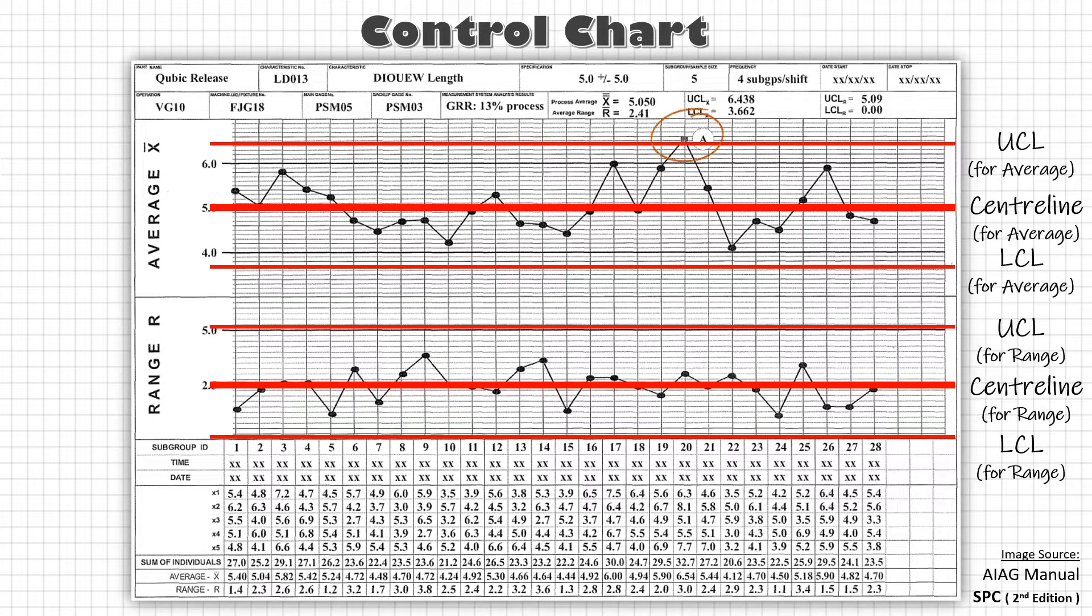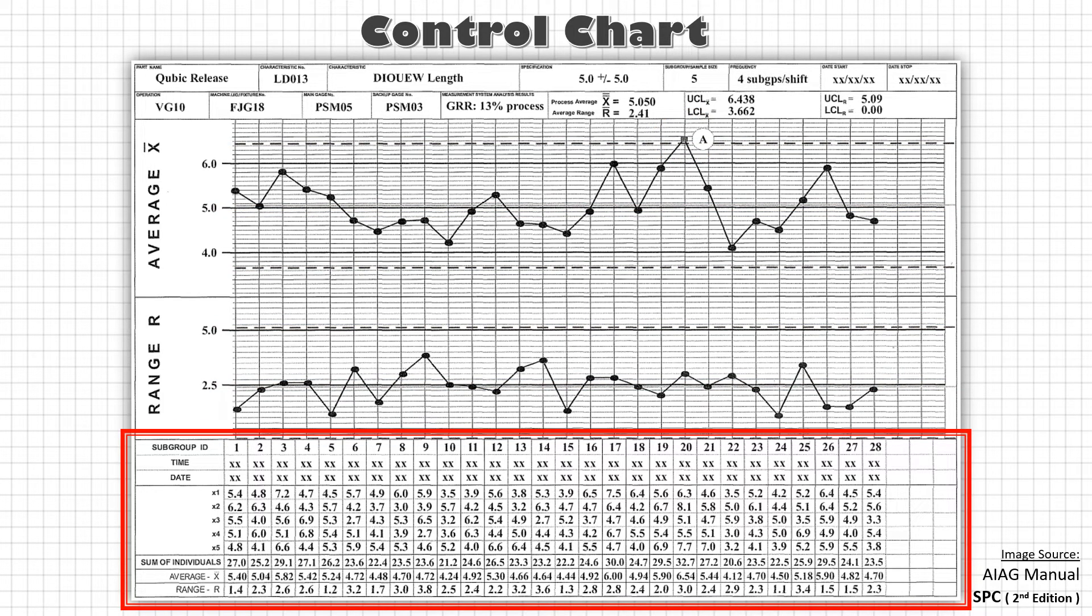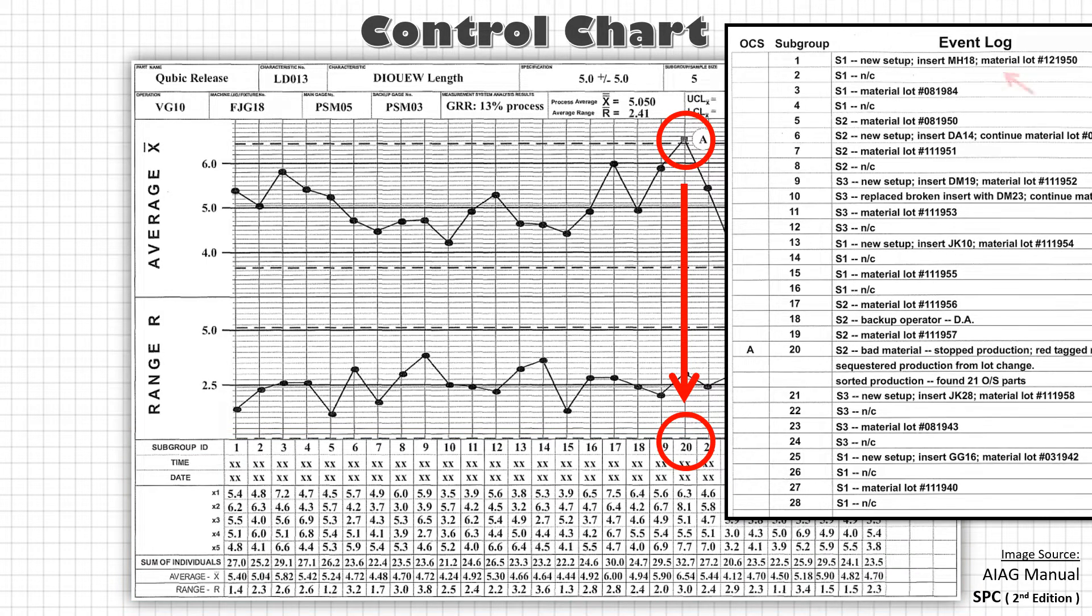Any data beyond these control limits indicate the presence of a special cause. Then we have subgroups to maintain the sequence in which the data is collected which helps us to identify when a special cause has occurred and finally event log information that include any potential source of variation during each sampling which can be used to find the origin of the special cause.